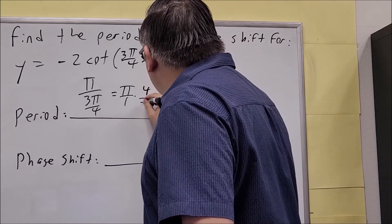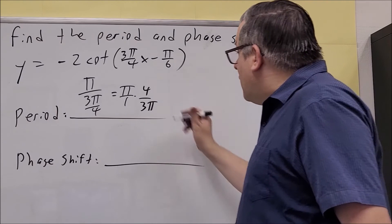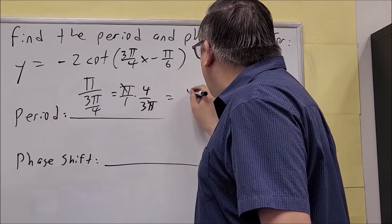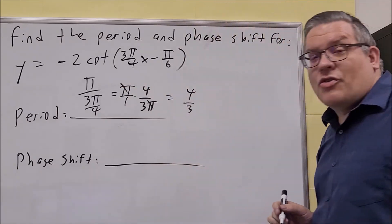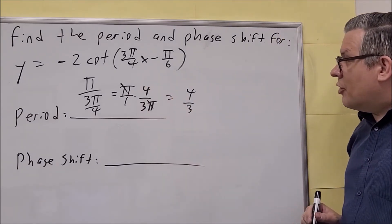We're flipping this one over just like that. You're going to get the π's to cancel out and you get 4 thirds. So 4 thirds will be your period because the π's are going to cancel.